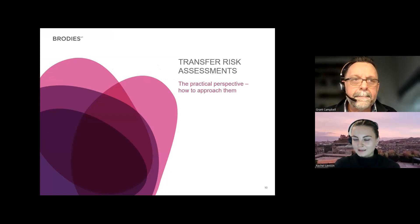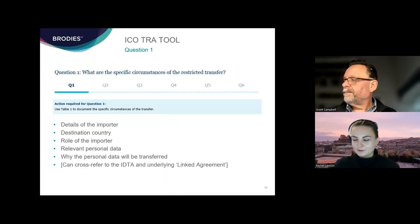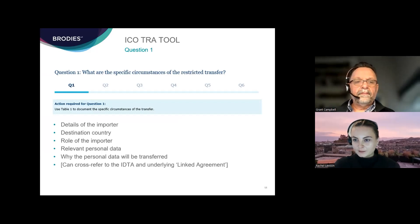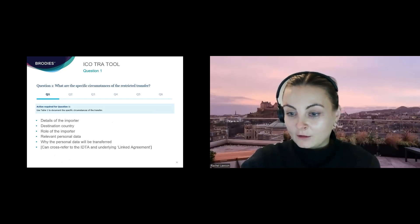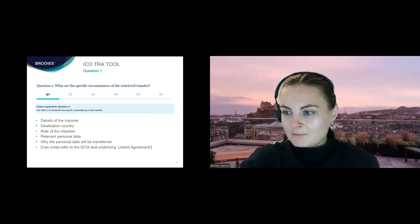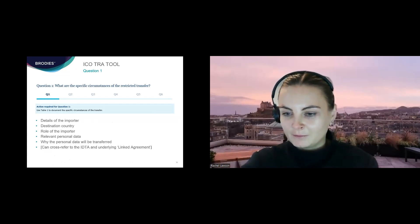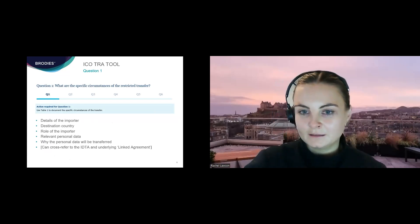Thanks Grant. As Grant just mentioned, the ICO now offers two options for undertaking a transfer risk assessment. We're going to run through the ICO TRA tool, which is recently published — option one. There are six questions, and I'm just going to run through each of them so you can be a bit more familiar with the tool if you're going to be using it in the near future.